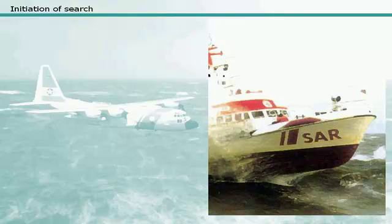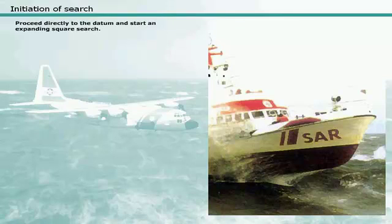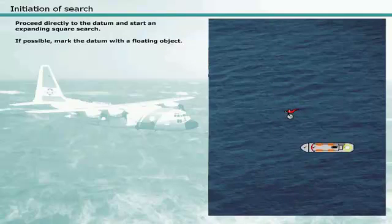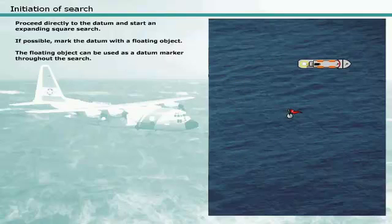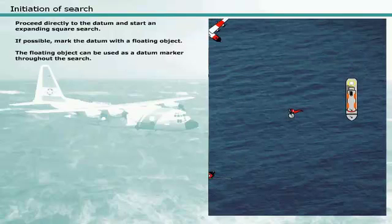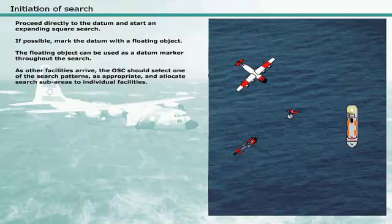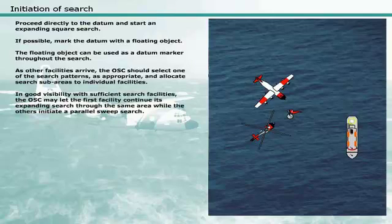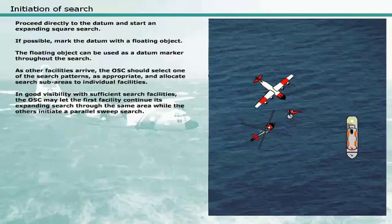When a search facility arrives on scene in advance of the others, it should proceed directly to the datum and start an expanding square search. If possible, mark the datum with a floating object, which can be used as a datum marker throughout the search. As other facilities arrive, the on-scene coordinator should select one of the search patterns as appropriate and allocate search sub-areas to individual facilities. In good visibility with sufficient search facilities, the on-scene coordinator may let the first facility continue its expanding search while the others initiate a parallel sweep search.